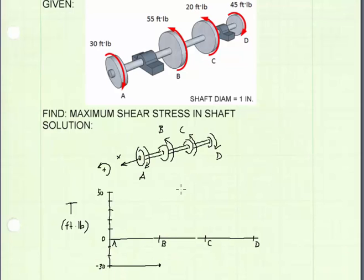At point B, a positive 55 foot-pound torque is applied. We're going to see a jump from negative 30 foot-pounds up 55 foot-pounds. This will take us up to 25 foot-pounds. Then from B to C, we remain at a positive 25 foot-pounds.